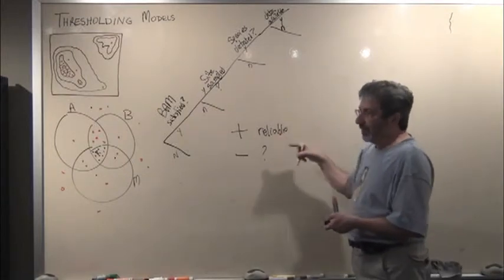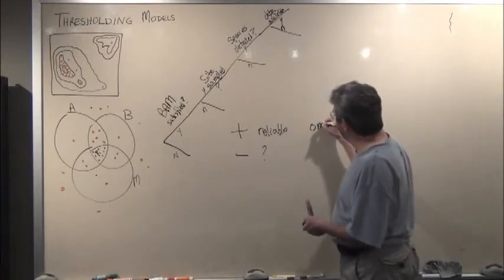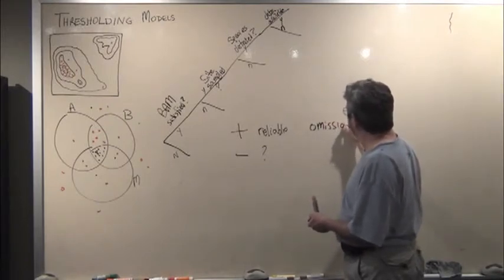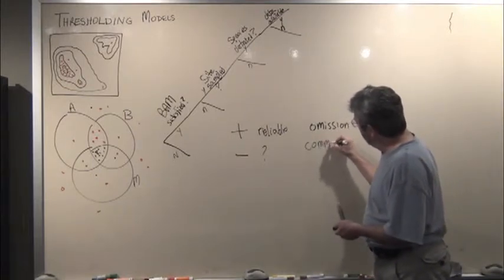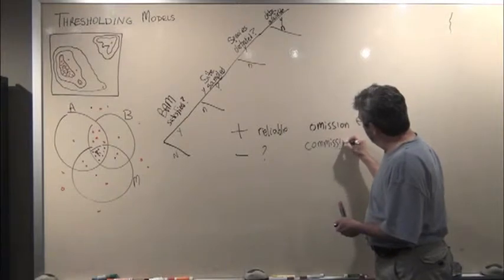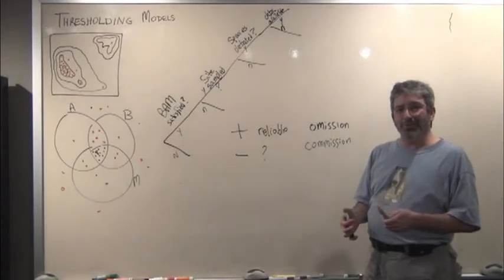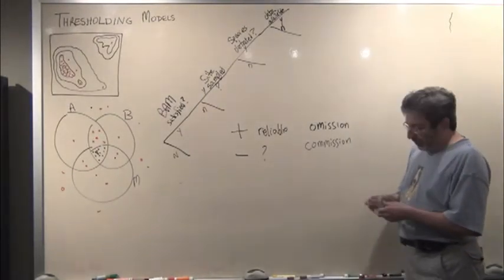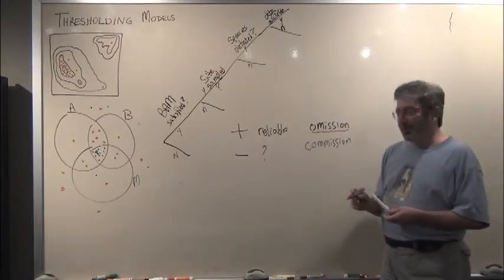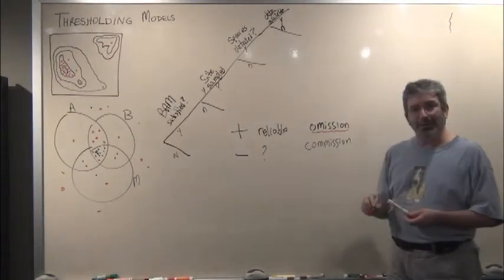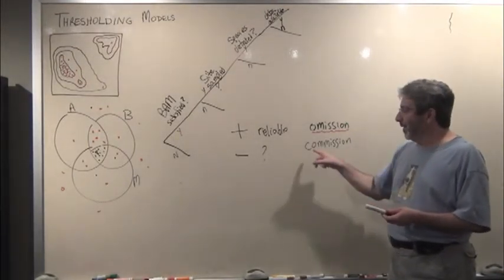The corresponding errors are omission error, which is leaving out a known presence, and commission error, which is including a supposed absence within the prediction of presence. What I'd like you to do is think that we need to prioritize omission error over commission error. An error of omission is a much more serious error than an error of commission.